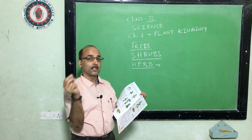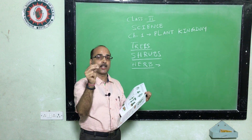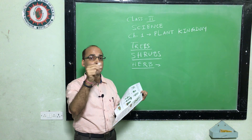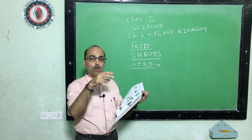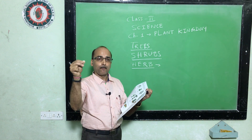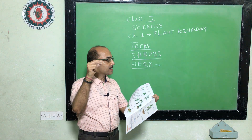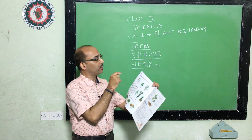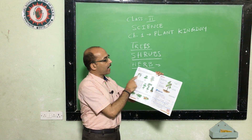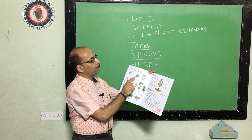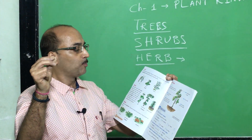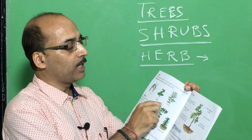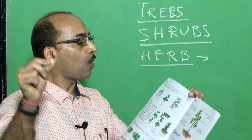See the difference: a tree has a hard and strong stem; a shrub has a hard and thin stem; and herbs have a very thin and soft stem. See the pictures of herbs — this is rice, this is mint (you know it as pudina), this is a medicinal plant, and this is tomato. These are all herbs.